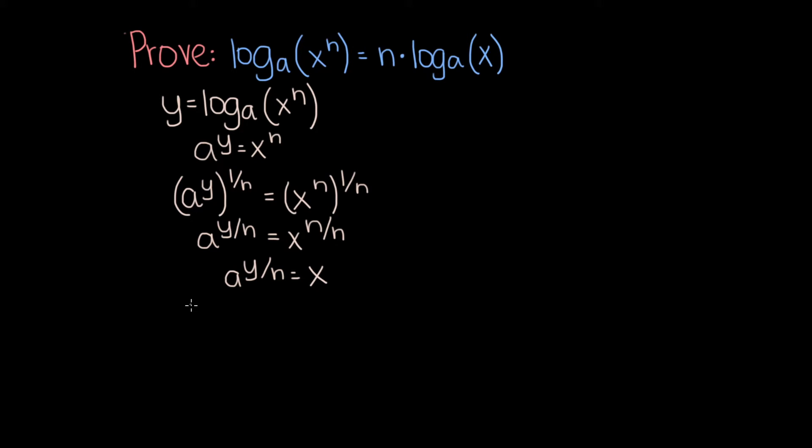Now if we take the log base a of both sides, this is what we get. The left side of this equation simplifies to just y over n because the power you raise a to to get a to the y over n is just y over n. And this is equal to the log base a of x.